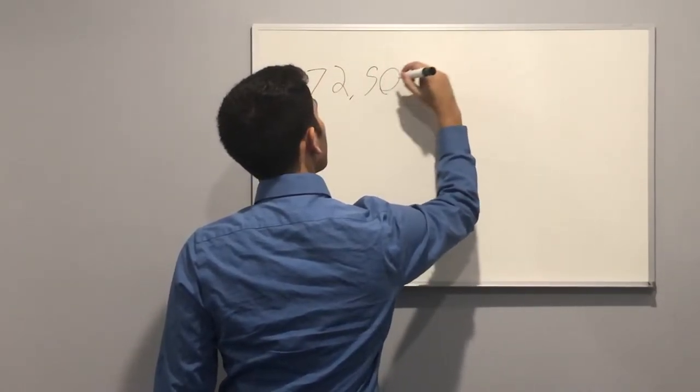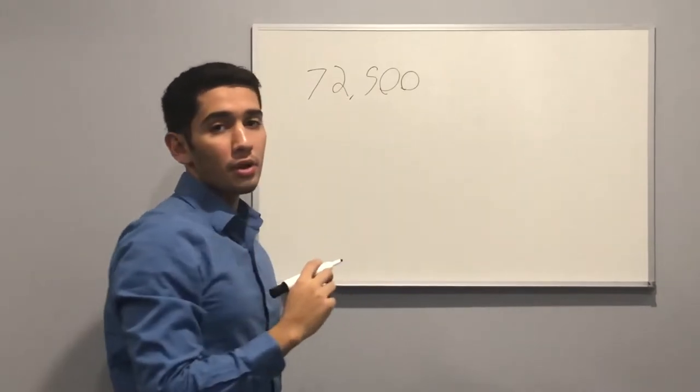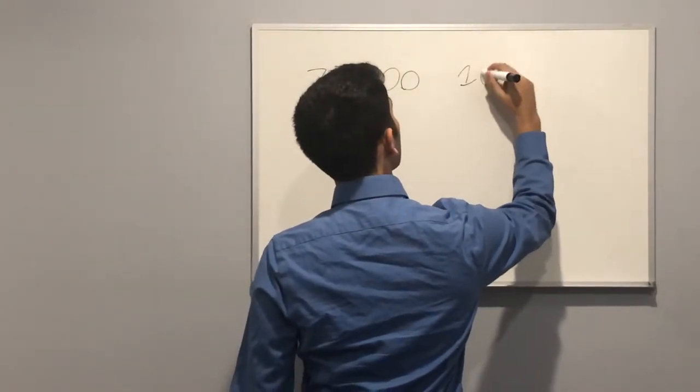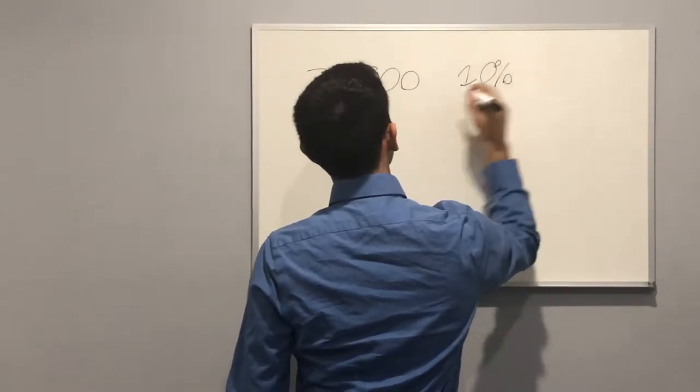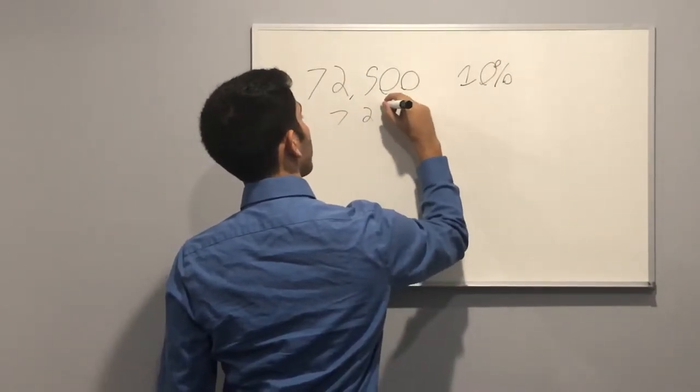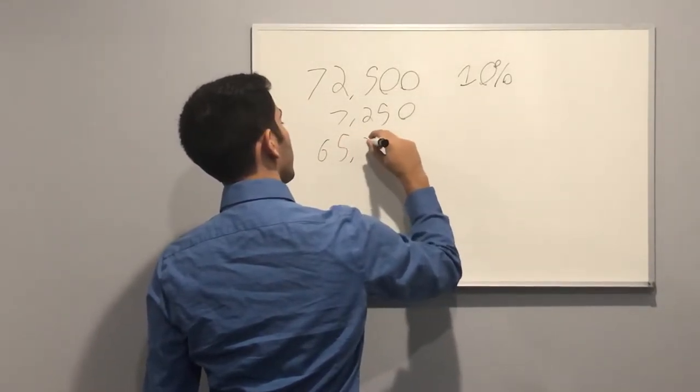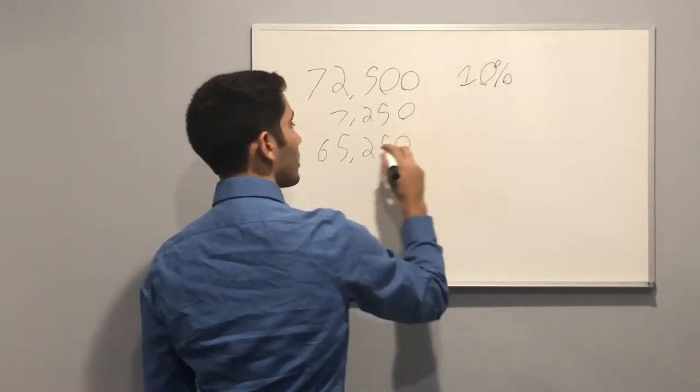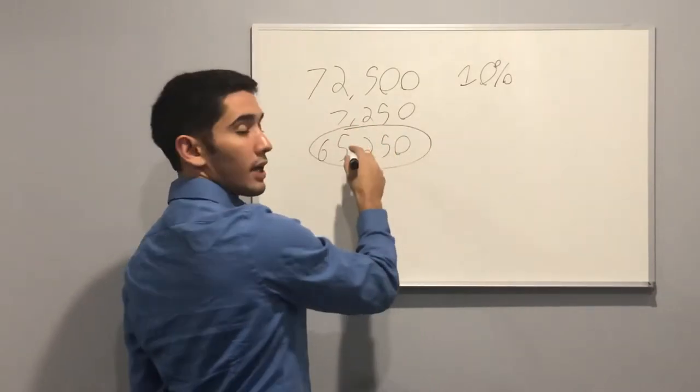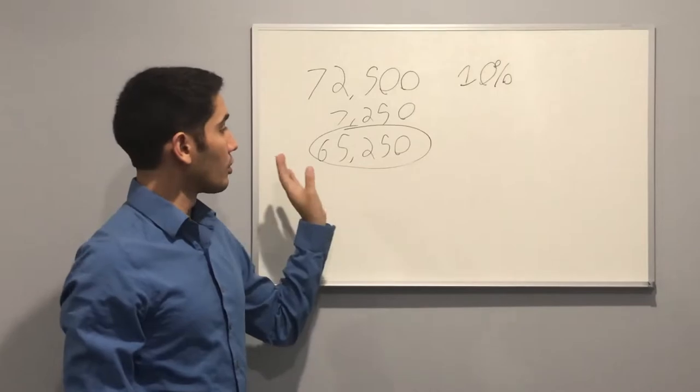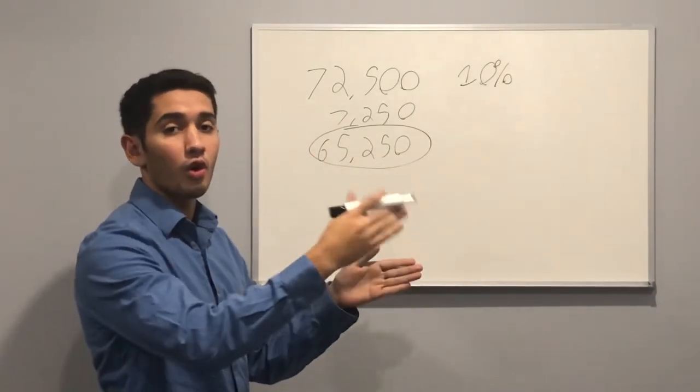$72,500. That was the purchase price. If you watched my other video you could tell that I put 10% down. So I paid $7,250 of that. So then I was left with $65,250. That number is my mortgage. This is the amount that I still owe on the house. So that's what's being amortized over the 30 years.